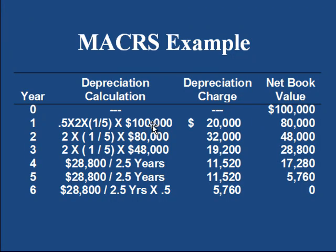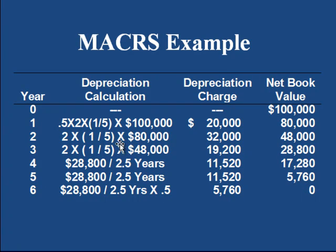The initial value is $100,000, and because the asset falls in the 5-year property class, in every year we'll charge one-fifth depreciation. We are bound to use the double declining method, so we always multiply the rate of depreciation by 2.